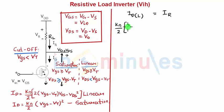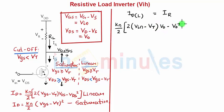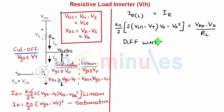For the linear region equation: (KN/2) * [2*(Vin - VT)*Vout - Vout²] = (VDD - Vout) / RL. Now let's differentiate this equation with respect to Vin and set dVout/dVin equal to minus one.